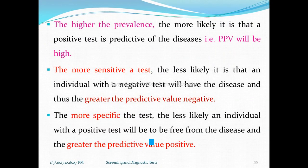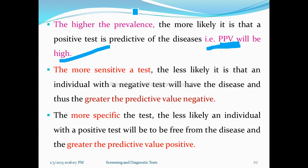The higher the prevalence, the more likely it is that a positive test is predictive. High prevalence means the positive test is more likely to be a true positive. So if prevalence is high, the positive predictive value will be high.